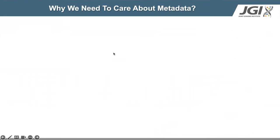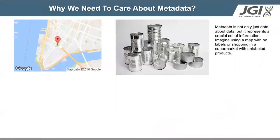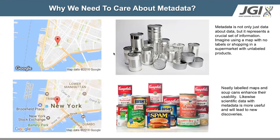What is metadata? Metadata is the data that provides information about data. Why do we need to care about metadata? Imagine you are given a map with no labels on it — can you use it to navigate from point A to B? Probably not. What about shopping in a supermarket with unlabeled products? You will not be able to get what you want. Proper labels — essentially, metadata — will enhance the usability of these products. Either using a map or shopping in a supermarket will be a better experience with labels. The same way, scientific data with metadata will be more useful and will lead to new discoveries.